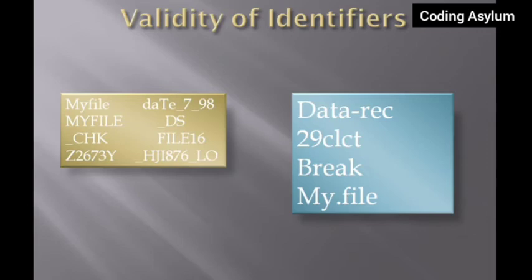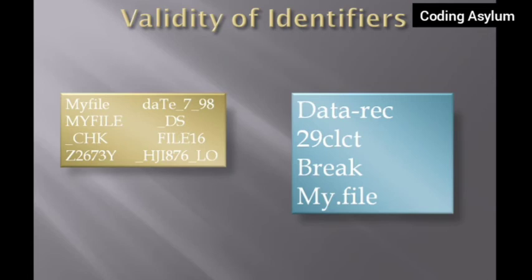The second invalid identifier is '29clcity' — it is invalid because it starts with a digit. An identifier should not start with a digit. The third one shown is 'Break' with a capital B — this is actually a valid identifier and was placed in the wrong text box by mistake. If it were written with a lowercase 'b' as 'break', it would be invalid because 'break' is a keyword in Python.